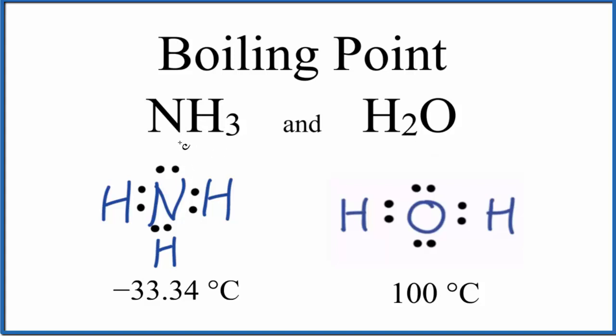It all comes down to these lone pairs here. Water has two lone pairs, so everything here can be involved in hydrogen bonding, where with the ammonia, there's only one lone pair, so it can't form as many hydrogen bonds.